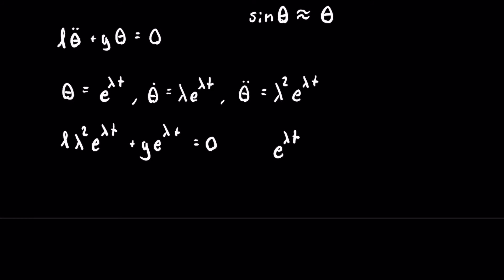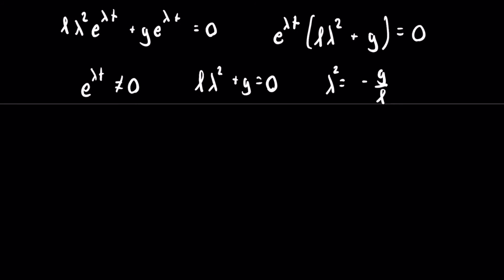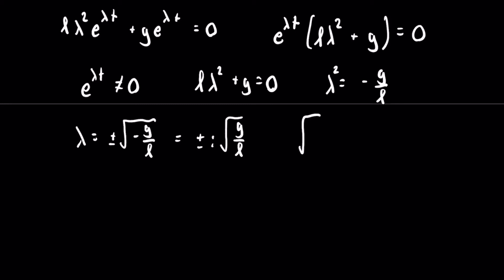We factor out e to the lambda t and are left with l lambda squared plus g. Since e to the lambda t cannot equal zero, we require that l lambda squared plus g equals zero. Solving for lambda squared gives lambda squared equals negative g over l. Taking the square root of both sides, lambda equals plus or minus the square root of negative g over l, which is also equal to plus or minus i times the square root of g over l. Like in the mass-spring system, we define omega as the square root of g over l.